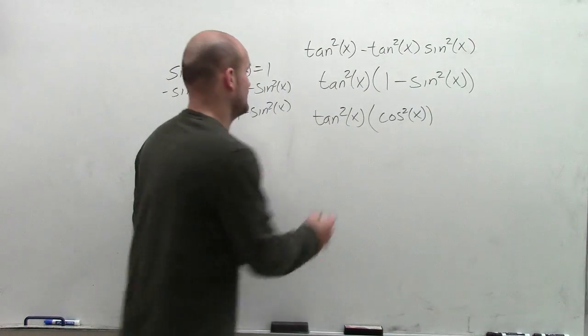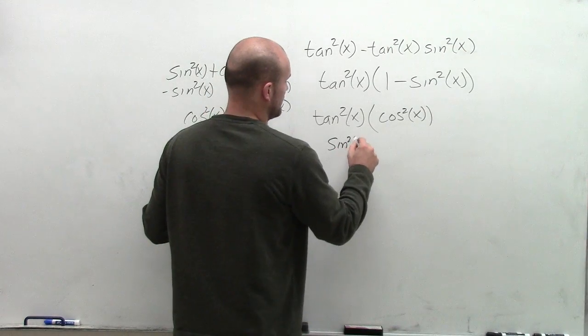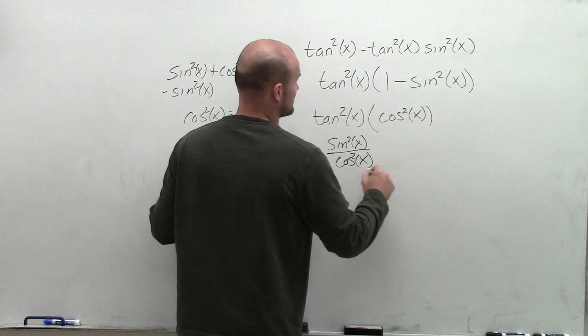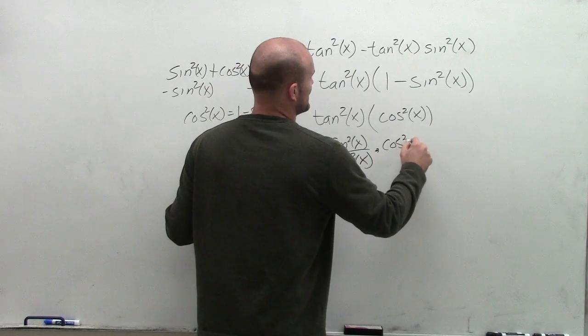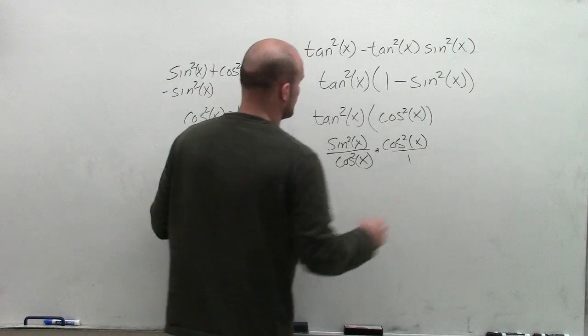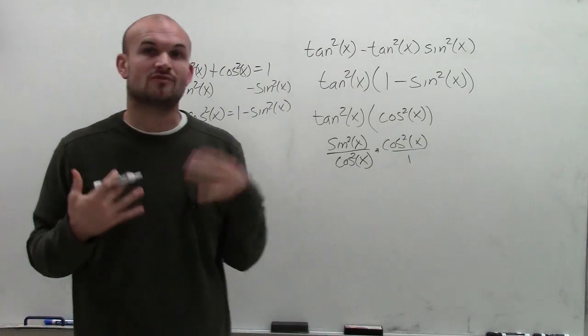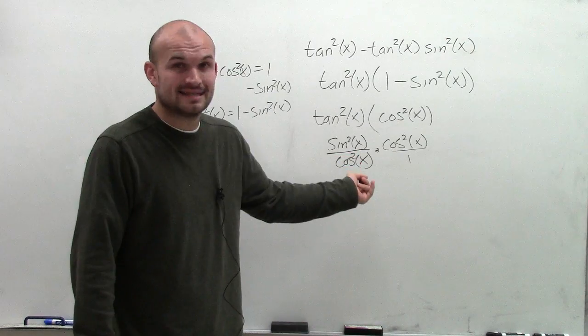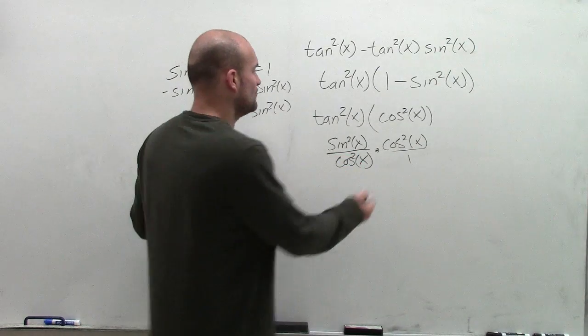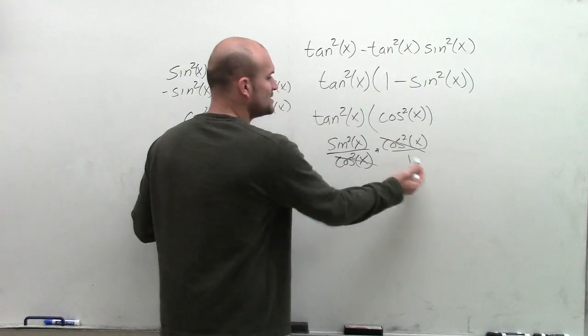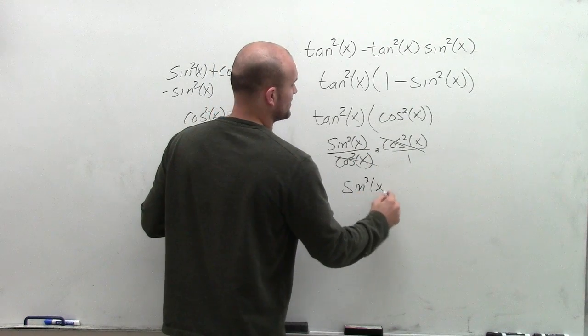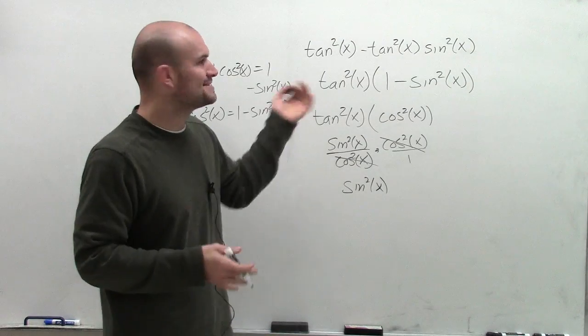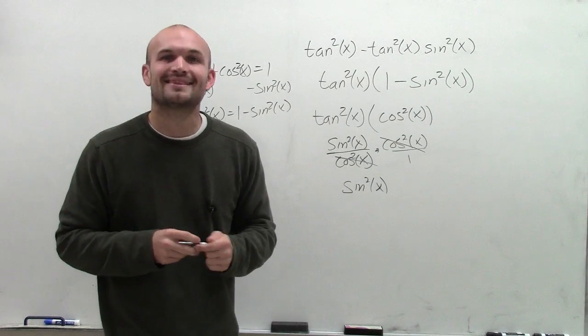I can rewrite tan²(x) as sin²(x)/cos²(x) times cos²(x). And I'm going to put that over 1 just to make sure I remind myself that the cos²(x) over here is in the numerator. And since I have it here in the denominator, those are going to divide to 1, which is just going to leave me with sin²(x). So there you go, ladies and gentlemen. That is one way to simplify a trigonometric expression. Thanks.